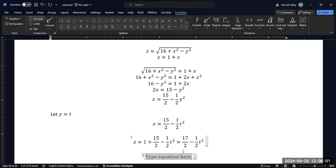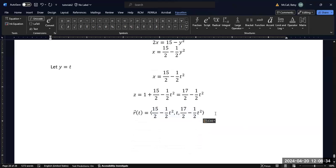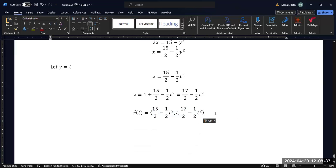And so now my parameterized intersection of surfaces is going to be my x expression in terms of t, comma, my y expression in terms of t, which is just t. And so now I could say things about the curve that these two functions intersect on. I could follow the curve in space.